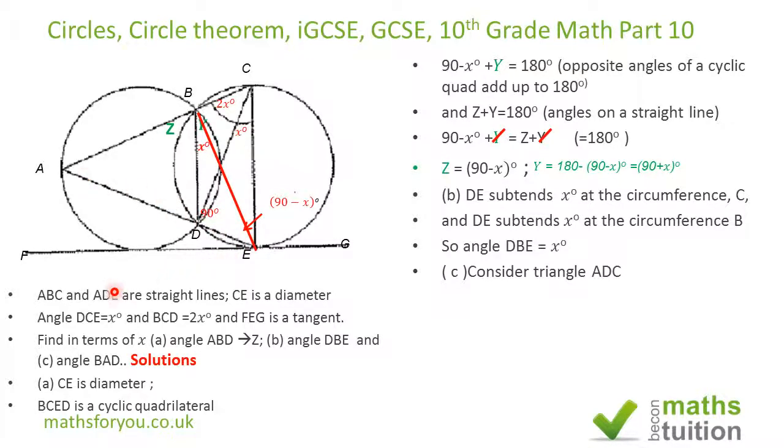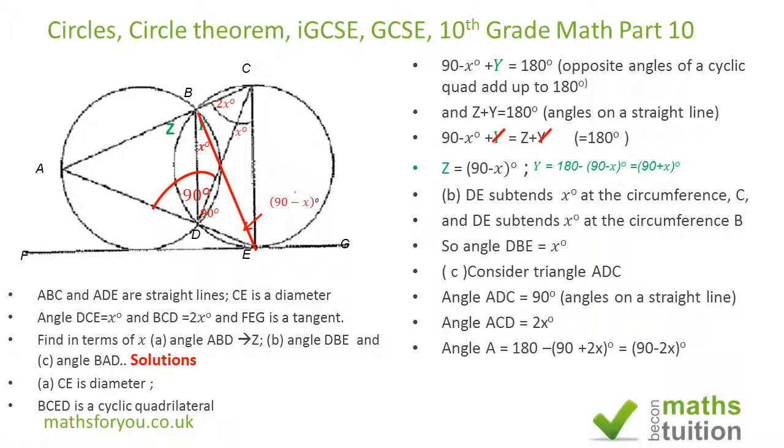So that's 90 degrees, and that's 2x. Those two must add up to 90 degrees, so angle BAD has got to be 90 minus 2x degrees. And that's what we got there.